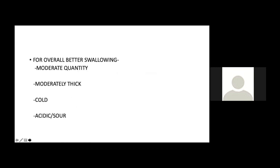For overall swallowing improvement, food should be given in moderate quantity — too little reduces mucosal sensation, too large increases aspiration risk. Food should be moderately thick, cold, and sour to increase sensitivity. A cold spatula or cold spoon from the fridge touched to the tonsillar area increases sensitivity. Lemon juice or other acidic substances can be added to the food to increase receptor sensitivity and reduce dysphagia.